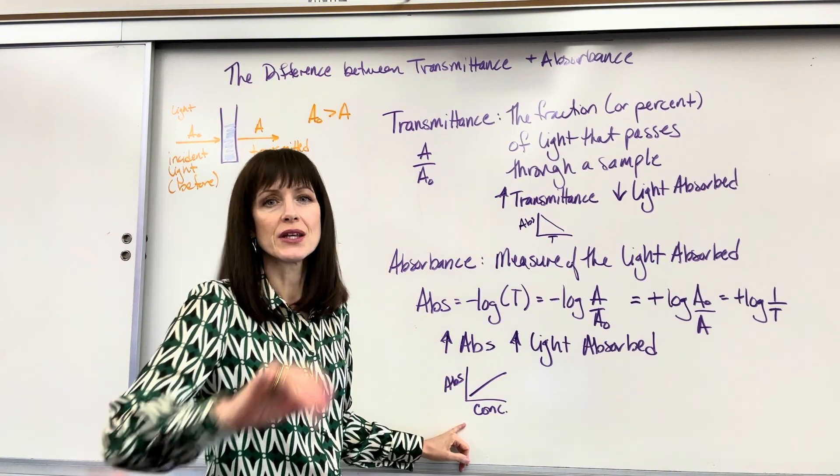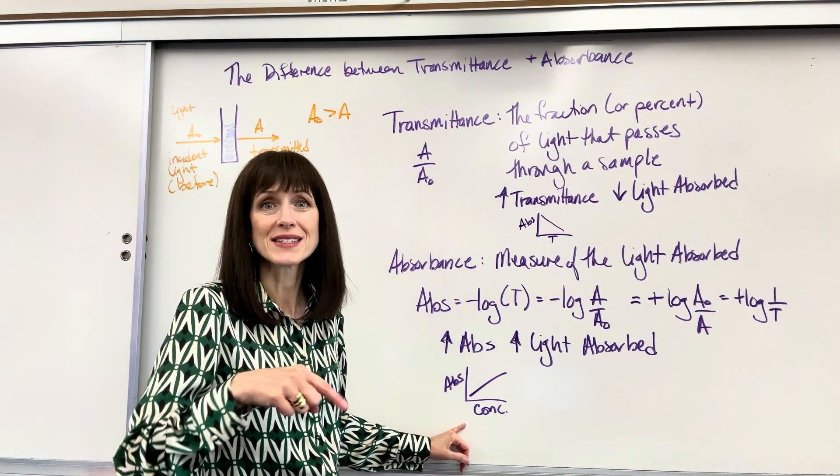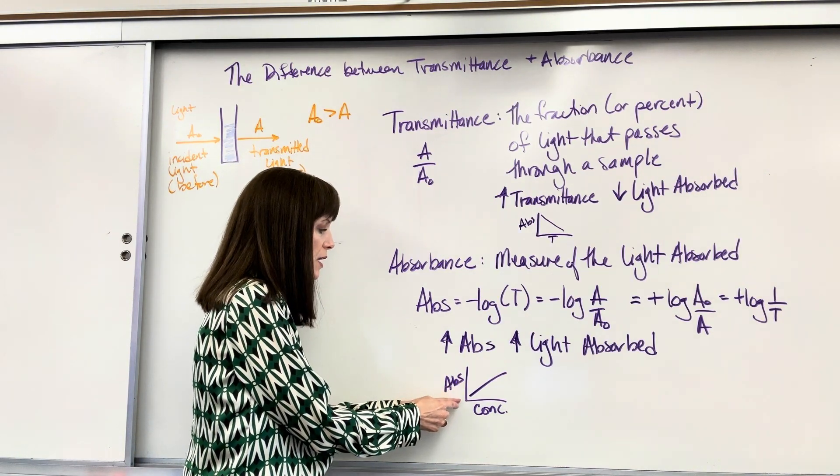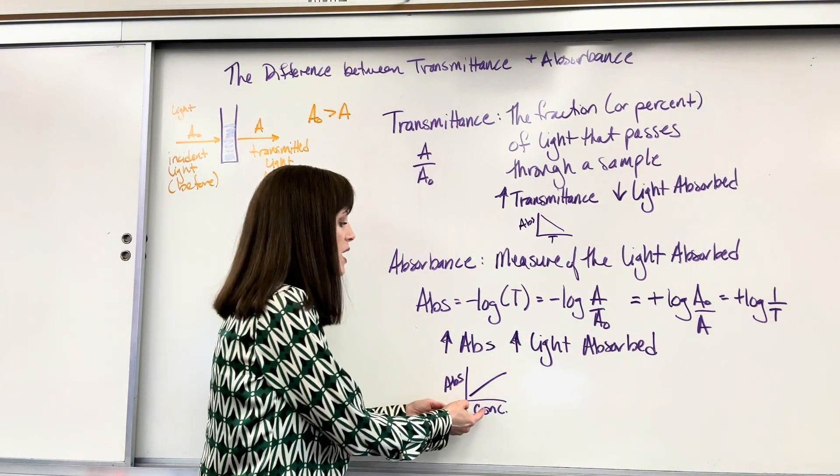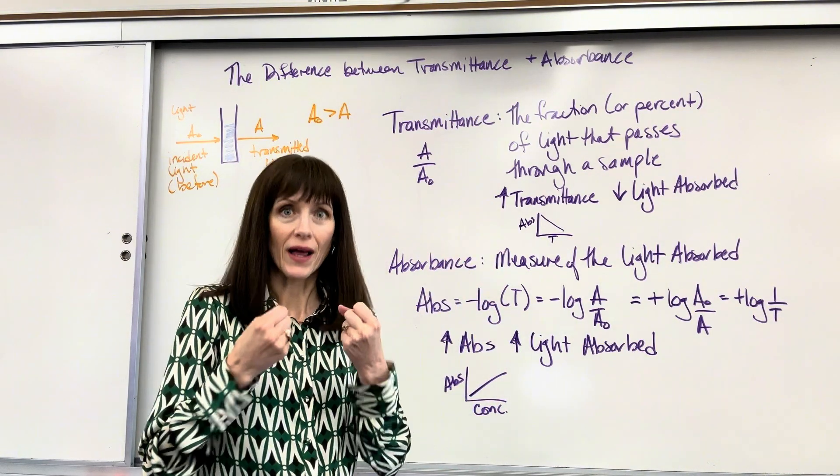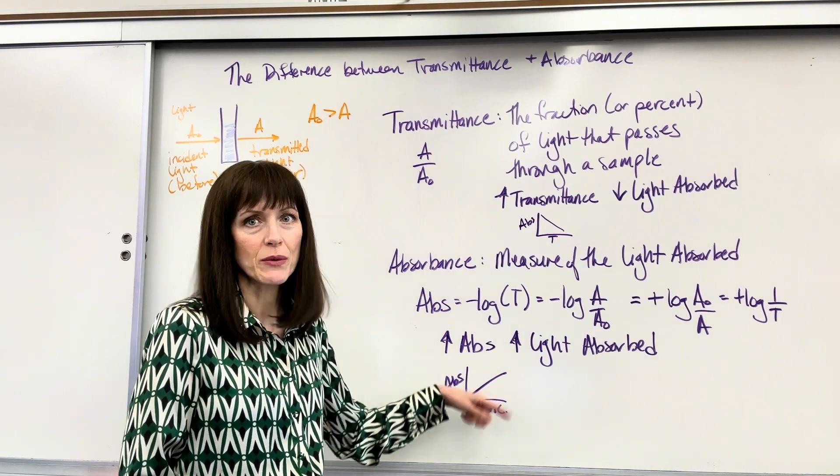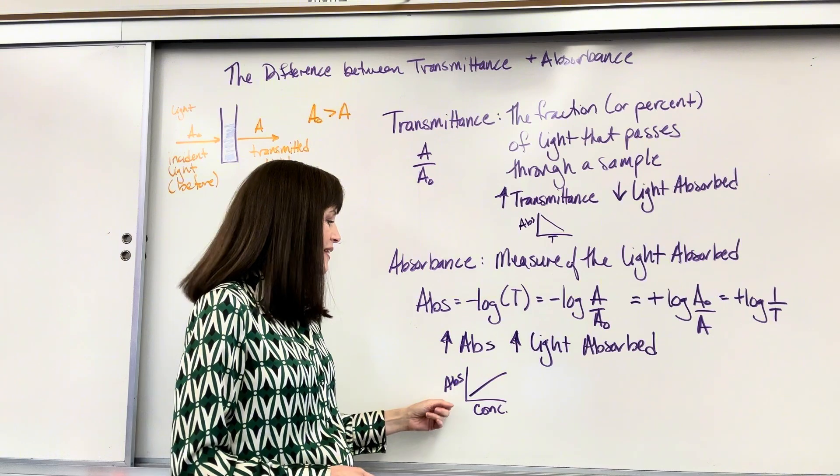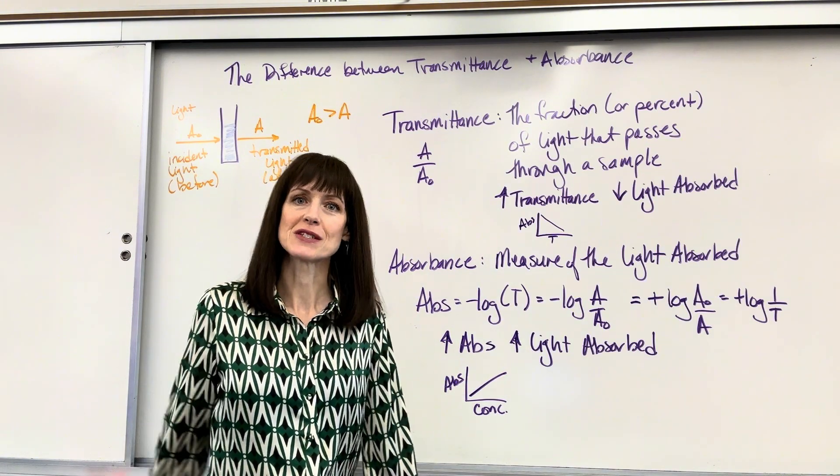And so this is really what we usually use for Beer-Lambert plots, and you can watch that video if you have questions on that. As you increase absorbance, you increase the concentration, and vice versa. As you have a higher concentration, you have more light absorbed, a higher absorbance. This is usually where we live, but you need to understand the difference between those two to really fully grasp that final graph that we use for spectrophotometry.